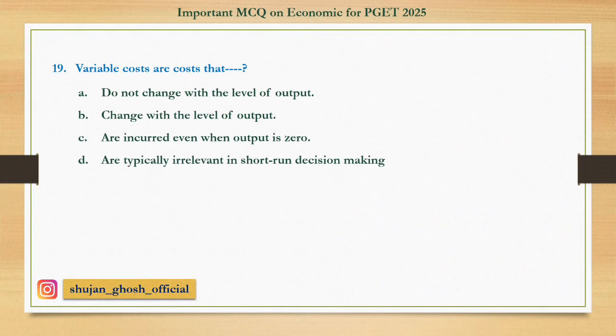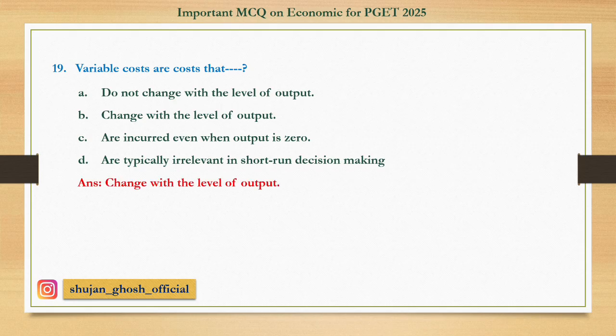Question number nineteen: Variable costs are costs that — option A: do not change with the level of output; B: change with the level of output; C: are incurred even when output is zero; D: are typically irrelevant in short-run decision making. Answer: change with the level of output.